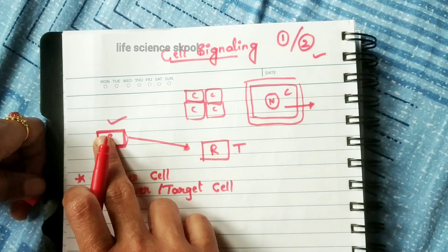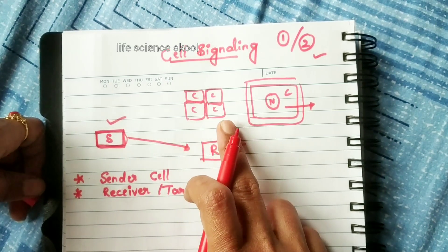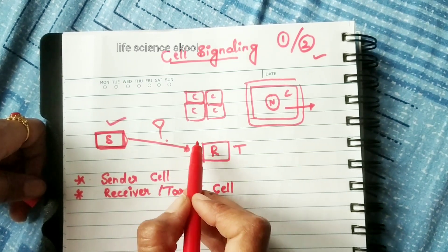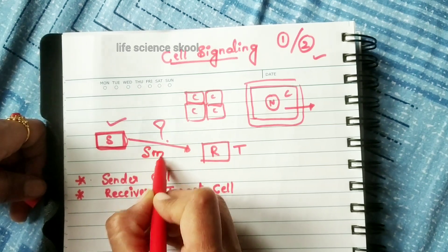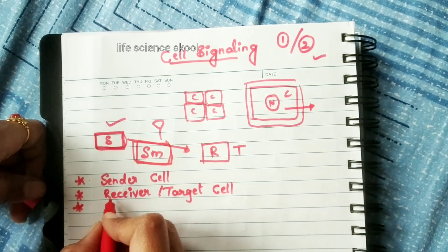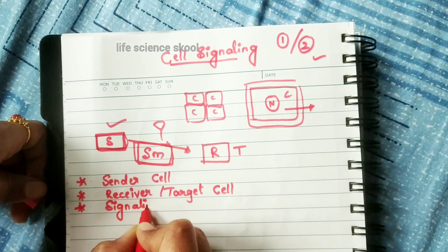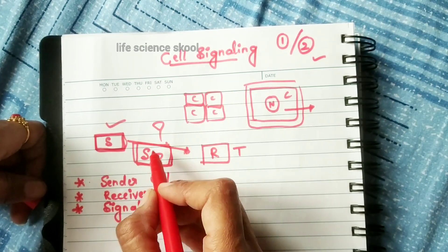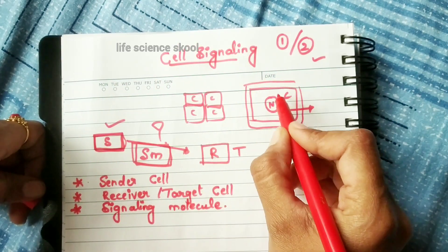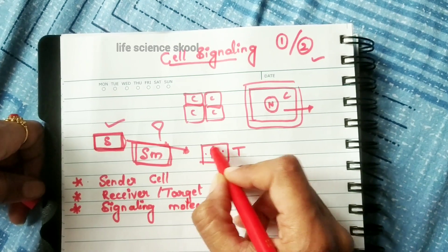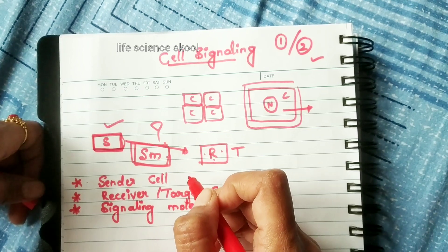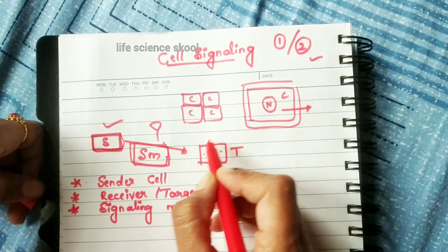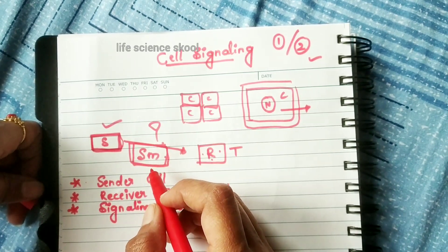Now the question is: how is this happening? The sender cell sends the information and the receiver cell receives the information via a molecule called the signaling molecule, abbreviated as SM. A signaling molecule may be any molecule that carries a signal or information that alters the cellular activities of the target cell.